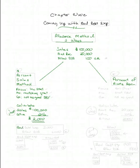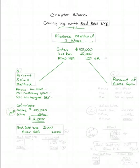Bad debt expense would be shown at $2,000 and the allowance for doubtful accounts would be shown at $2,000. It's very good matching because we have matched the expense directly against the sales in the period covered. Let's post our journal entry into our accounts.